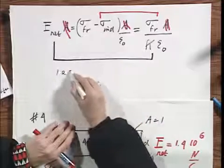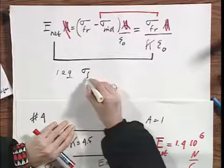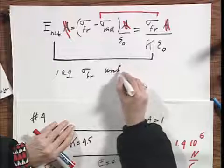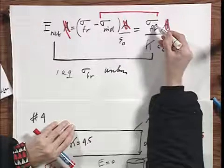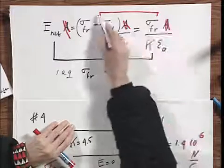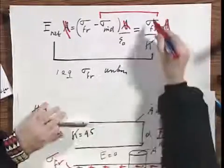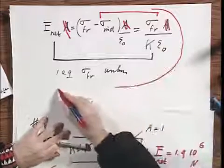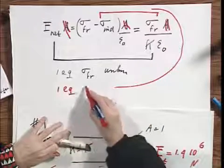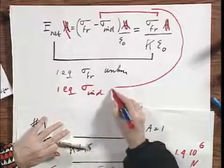And that gives me one equation with sigma free as unknown. So you solve immediately for sigma free. Now, I take this equation, but I know sigma free. And so this equation now is again one equation with sigma induced as unknown.